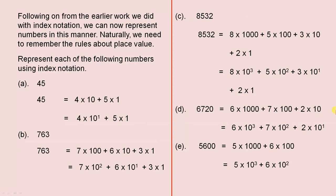Represent each of the following numbers using index notation. The first number is 45. We remember from our previous work that the 5 here is in the ones column and the 4 is in the tens column. So 45 equals 4 times 10 plus 5 times 1, which is 4 times 10 to the power of 1 plus 5 times 1. There's the index notation — 10 to the power of 1 — that's the base and that's the power, or the index.